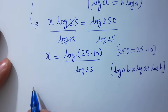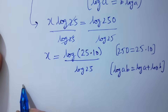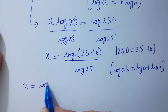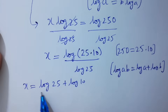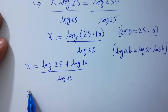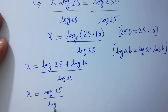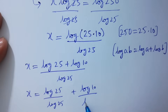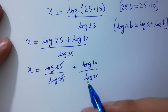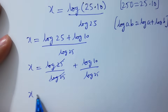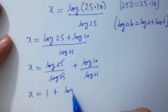So x equals (log 25 + log 10) over log 25. Splitting the fraction: x equals log 25 over log 25 plus log 10 over log 25. Log 25 and log 25 will be cancelled, giving x equals 1 plus log 10 over log 25.